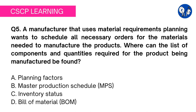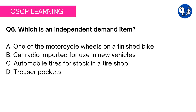A bill of material (BOM) is a centralized source of information used to manufacture a product. It is a list of the items and associated quantities to create a product, as well as the instructions on how to assemble that product. Bill of material provides the list of components and quantities required for the product being manufactured, so this is the correct answer.